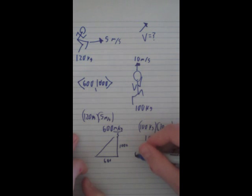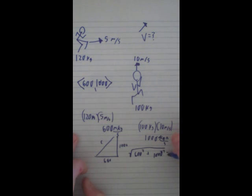So, we have 600 squared plus 1000 squared will give us c. It will give us 116.2.